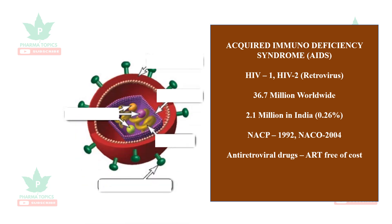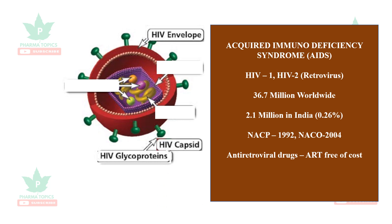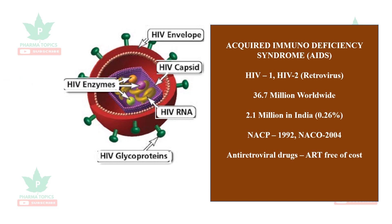The HIV virus has several important parts. It has an HIV envelope with envelope proteins called HIV glycoproteins. Inside the envelope is an HIV capsid which carries RNA — it is a retrovirus. More importantly, it contains three key enzymes: reverse transcriptase, integrase, and protease.